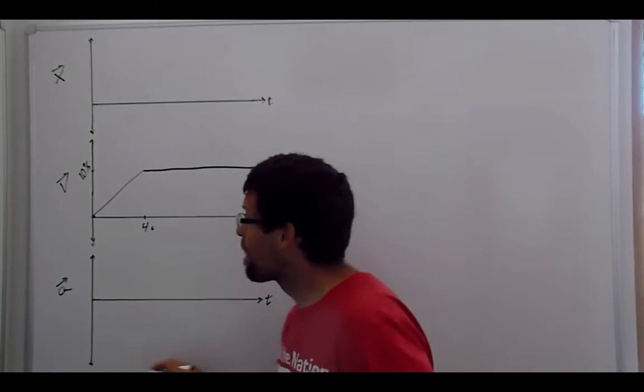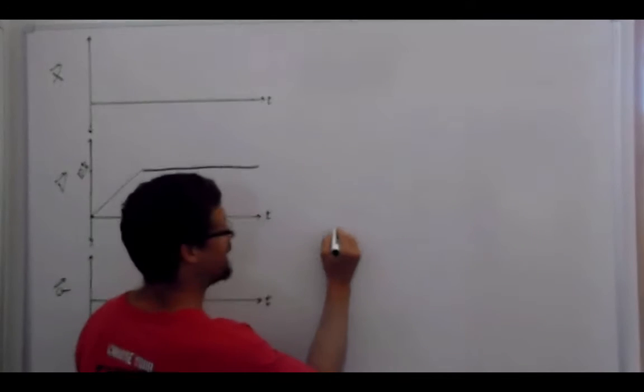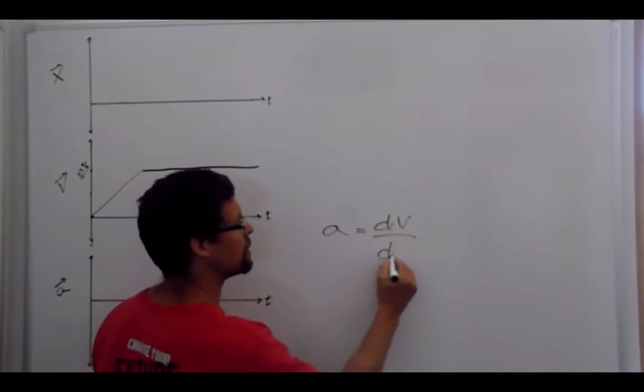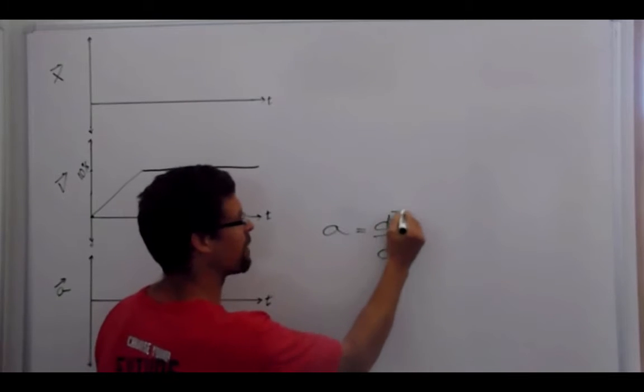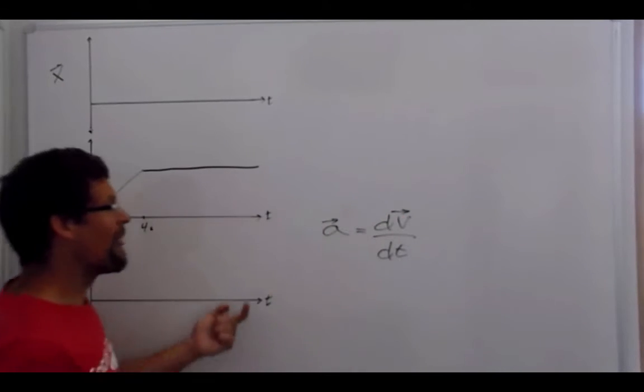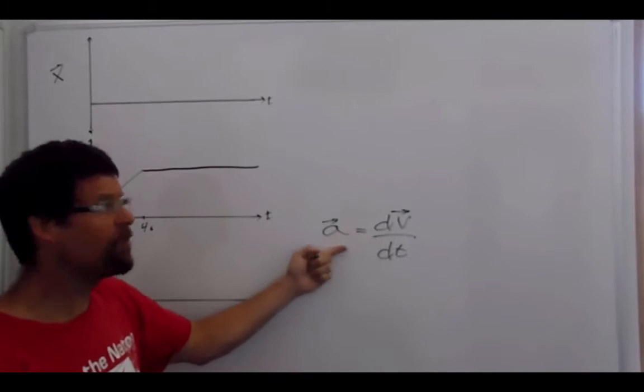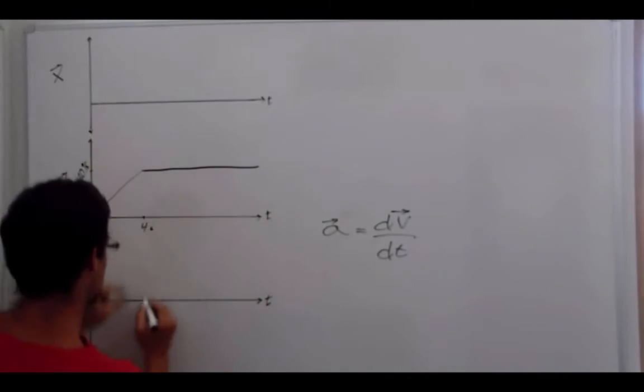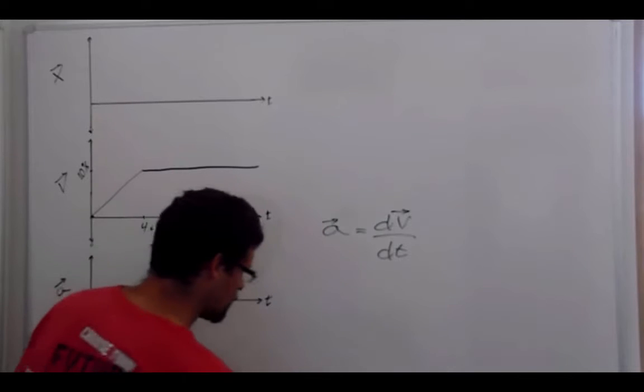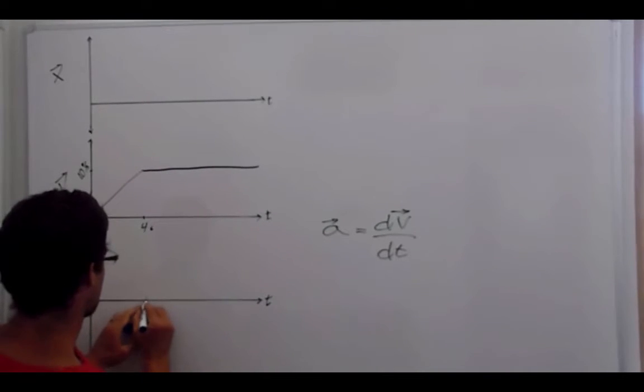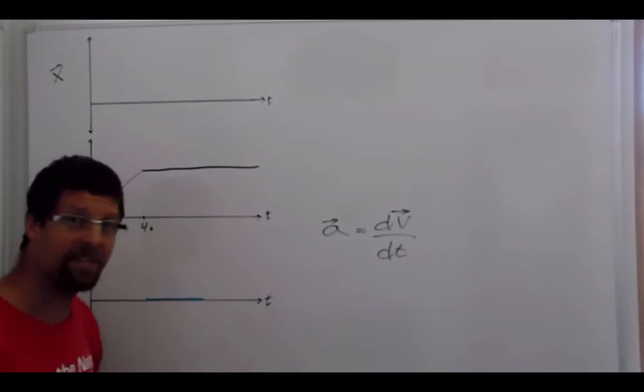All right, so what we remember is acceleration is equal to the rate of change of velocity, and these are vectors. So if the velocity isn't changing, like right here, the change is zero. There's no acceleration after four seconds, so I can draw after four seconds, this is flat.